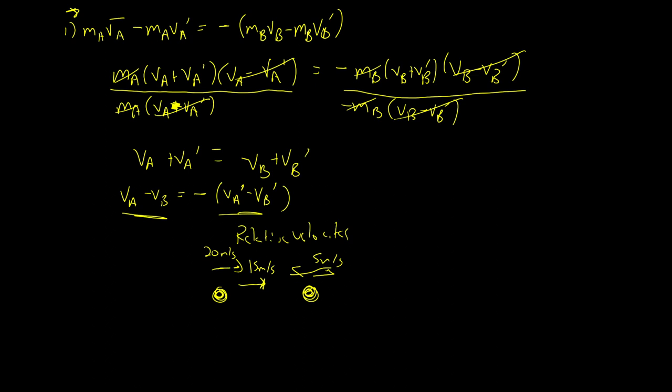When they collide, this says that the relative velocity, I don't know how much is in one particle or the other, the overall relative velocity will be 15 meters per second in the opposite direction. The relative velocity will stay the same but change direction.